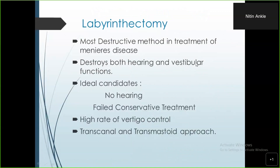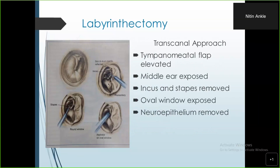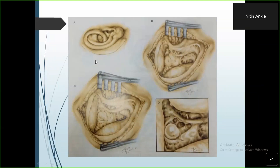Labyrinthectomy is the most destructive of all treatments for Meniere's disease — it destroys both hearing and vestibular function. The ideal candidate is a patient with no residual hearing. It is a total last resort when all other treatments have failed and there is a high rate of vertigo with no other way to control it. It can be done via the transcanal or transmastoid approach. In the transcanal method, the tympanomeatal flap is elevated, ossicles are visualized, the stapes is removed, and the neuroepithelium is removed through the oval window. In the transmastoid approach, a postauricular incision is made, a wide cortical mastoidectomy is performed, the semicircular canals are skeletonized, the lateral semicircular canal is opened, and all neuroepithelium is removed — completing the labyrinthectomy.